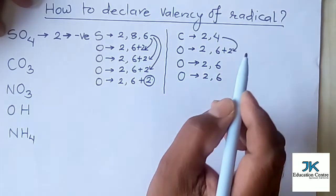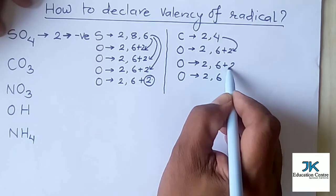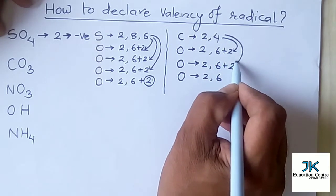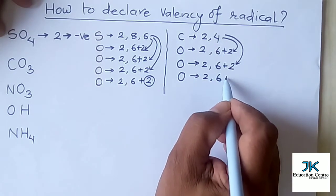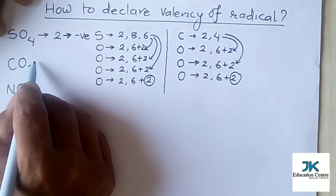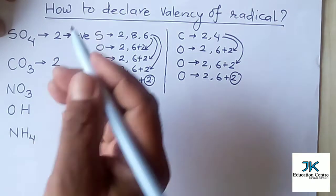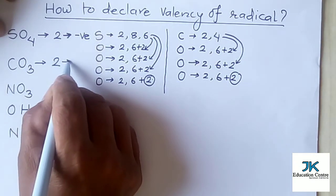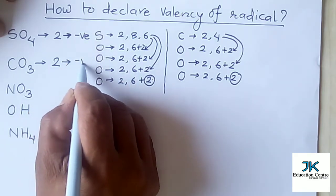Each oxygen atom gains two electrons from the carbon atom to form an octet. After all four of carbon's outer electrons are utilized across the oxygens, carbon still requires two more electrons. That's why carbonate's valency is two. Since it gains electrons in a chemical reaction, it is electronegative.